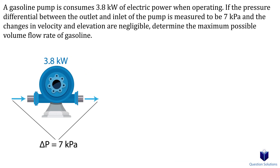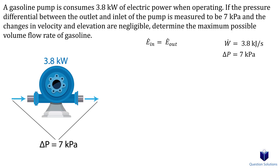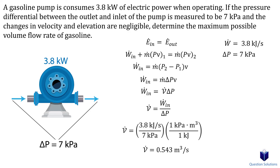Let's take a look at one last example. We have a gasoline pump that uses 3.8 kilowatts of power and creates a pressure difference of 7 kilopascals between the inlet and outlet of the pump. We need to find the maximum possible volume flow rate. The power usage is 3.8 kilowatts or 3.8 kilojoules per second, and delta P is 7 kilopascals. This question is very similar to the previous one. We write our energy equation: power going into the motor plus flow energy in equals flow energy out. Isolating and substituting mass flow times specific volume as volume flow, then applying the unity conversion ratio, gives us the maximum possible volume flow rate.